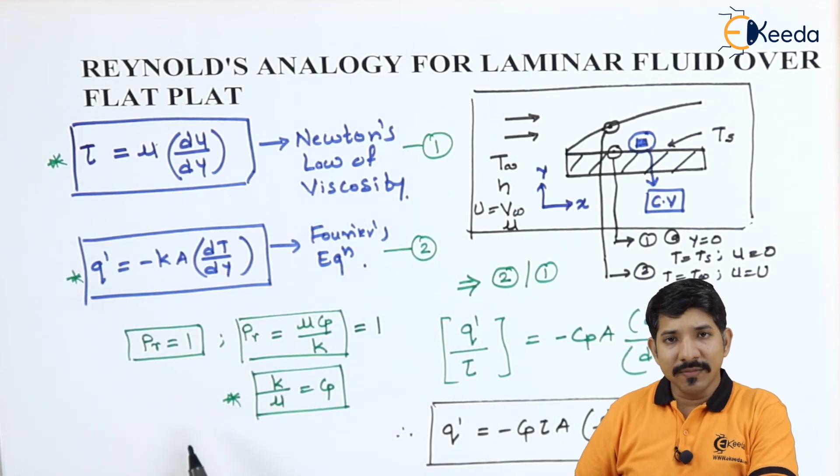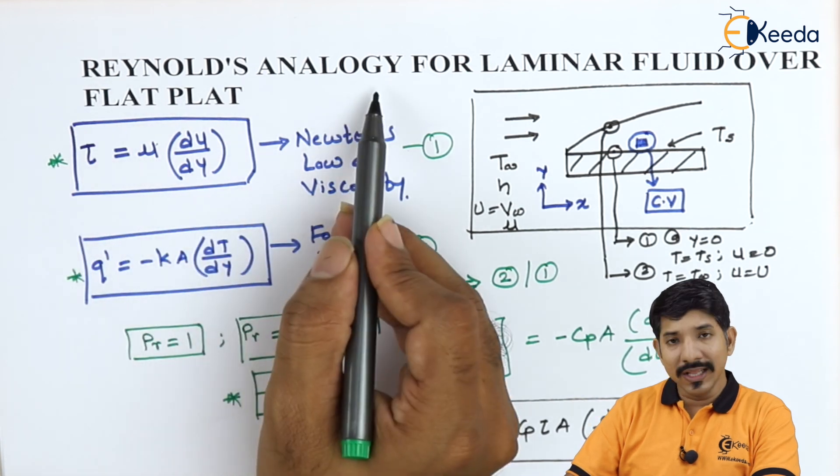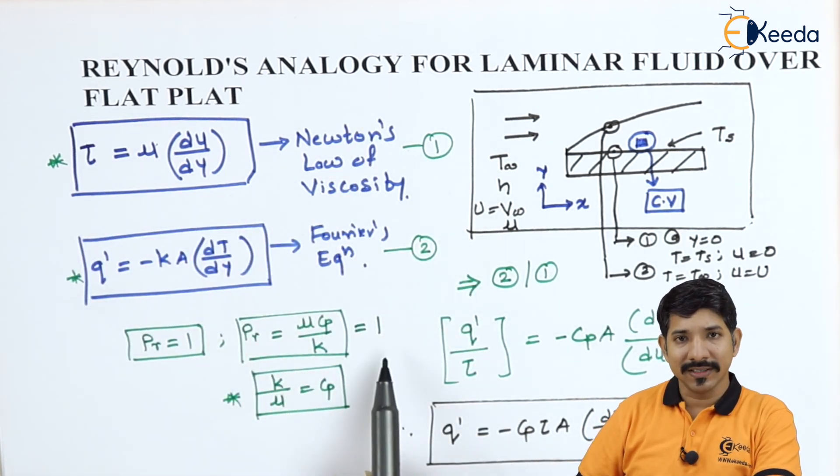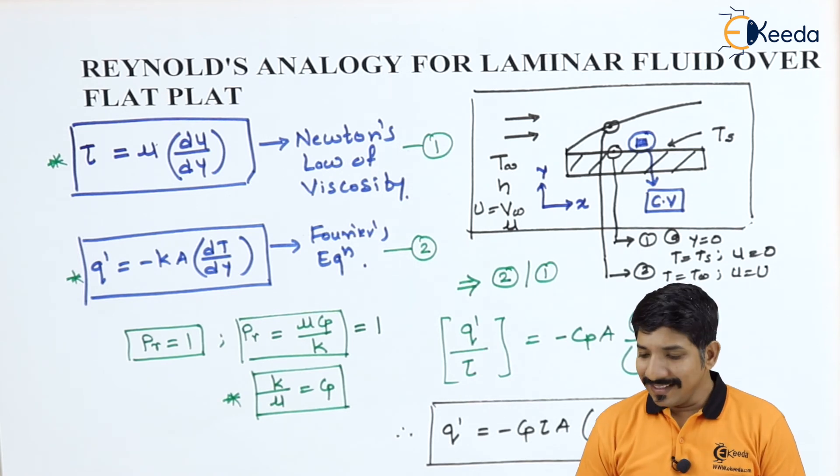So Reynolds analogy is one more method to find the value of heat transfer rate and hence the amount of heat transfer. One more thing that one must understand is that this Reynolds analogy is only applicable when my Prandtl number is unity. That is the important condition for the Reynolds number. Now that is it in this analysis of Reynolds analogy.